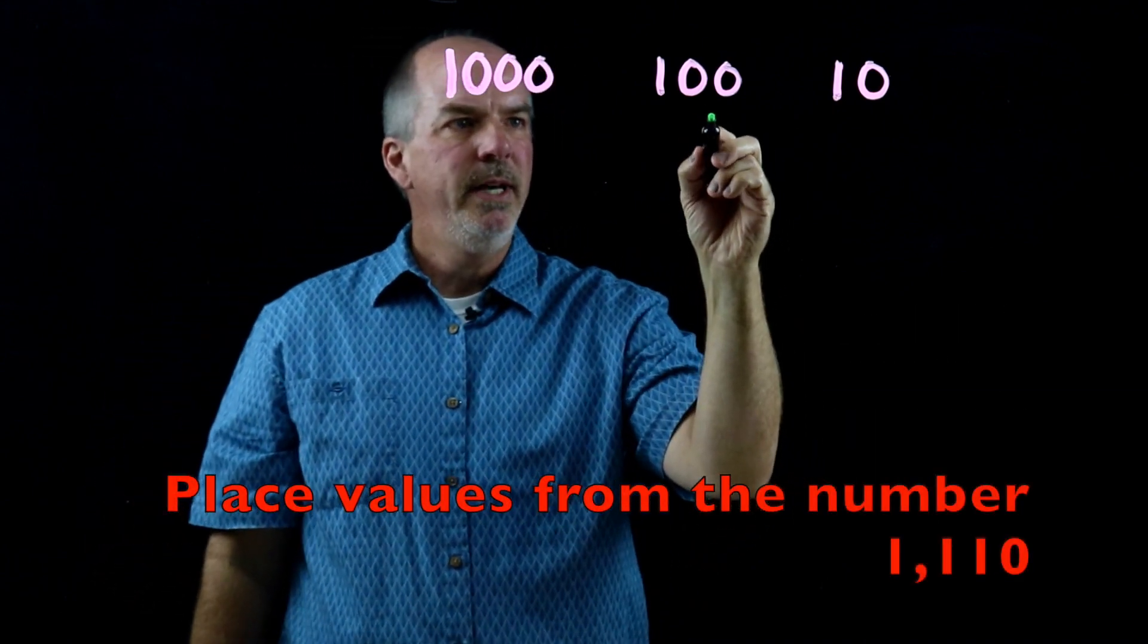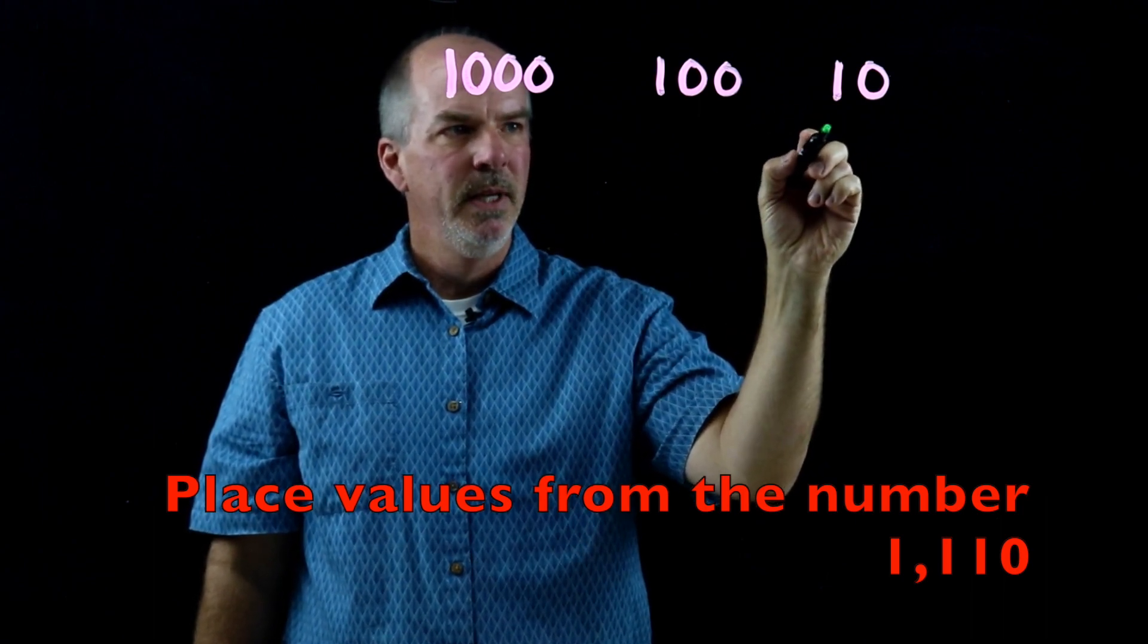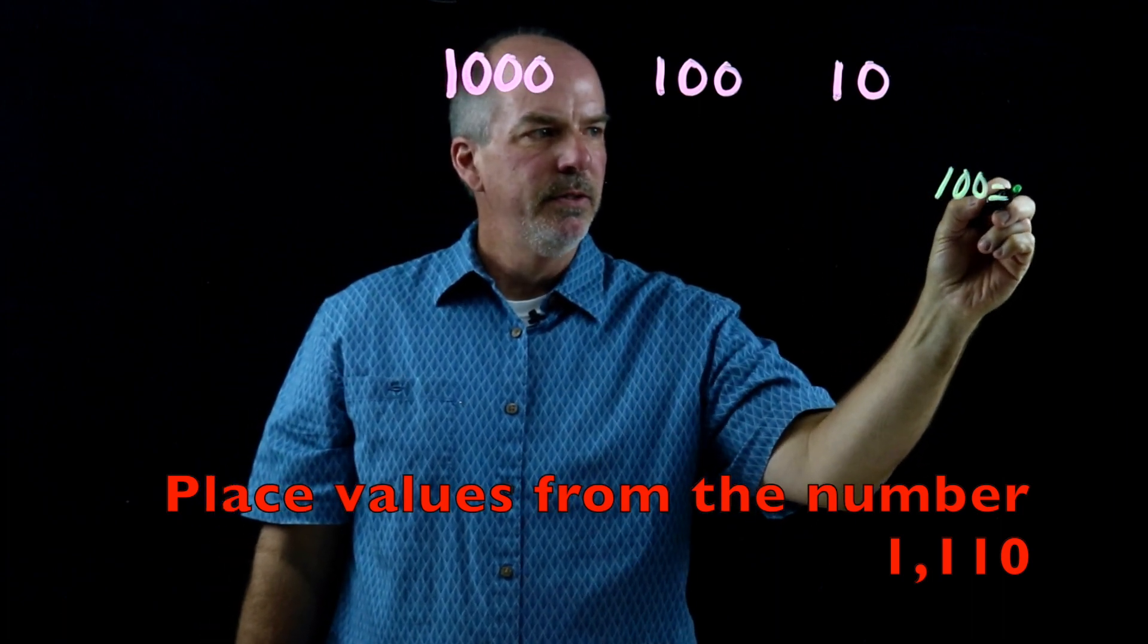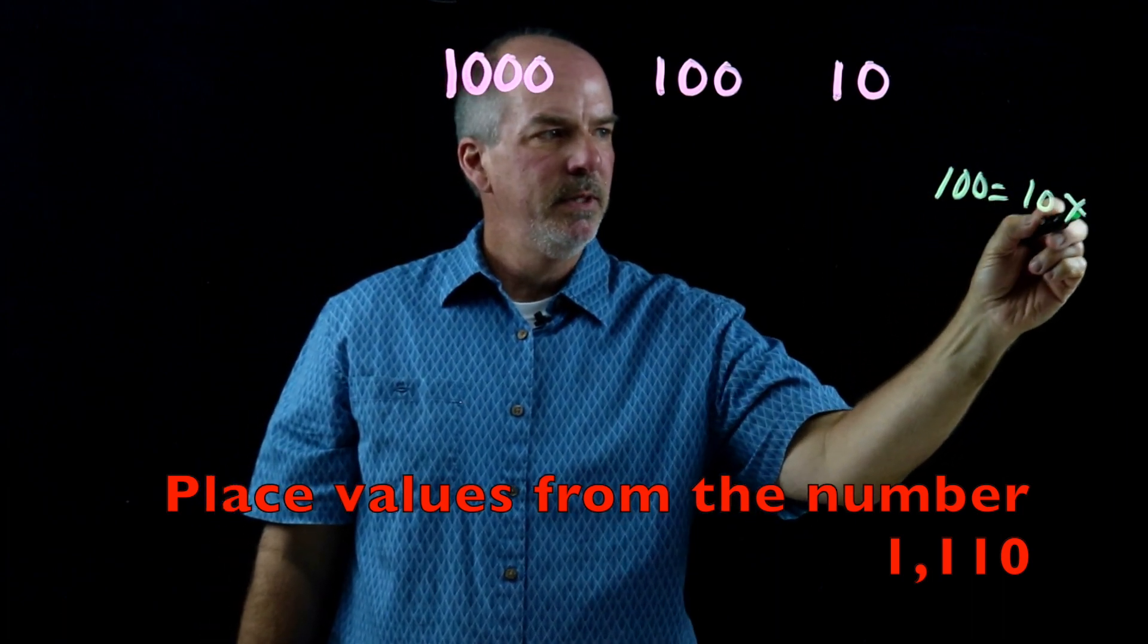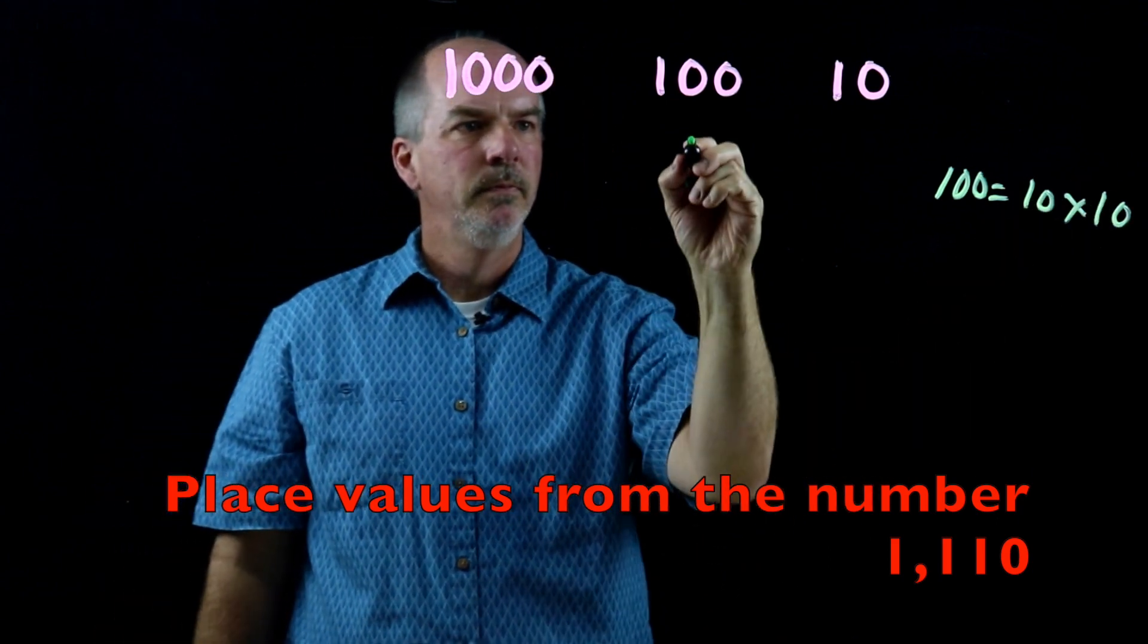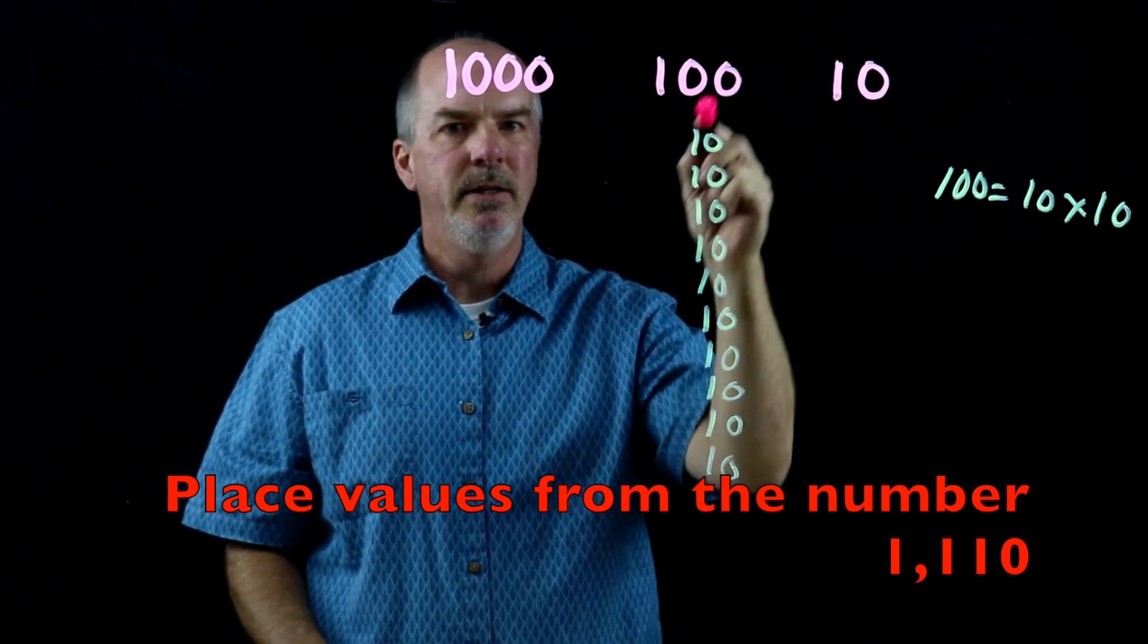So I know that 100 is ten times the value of ten. One hundred equals ten times ten. Let me just write 100 in another form. So this shows that ten times ten does equal 100.